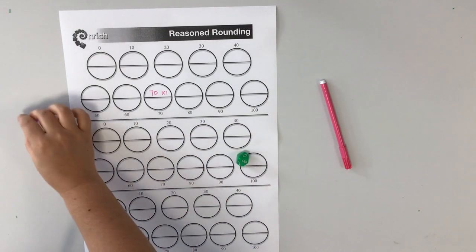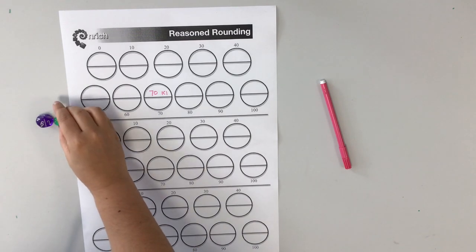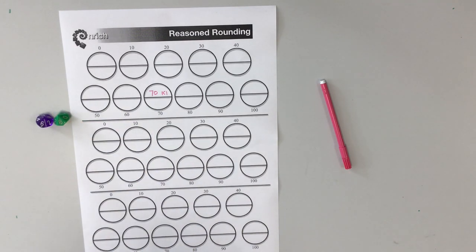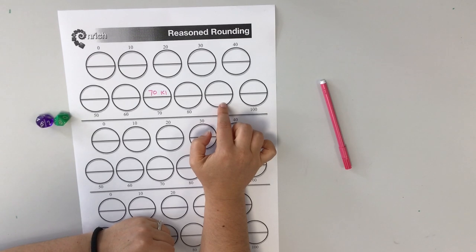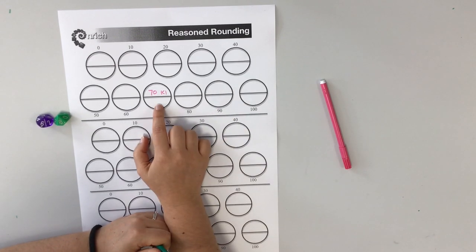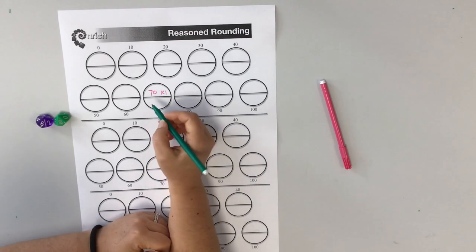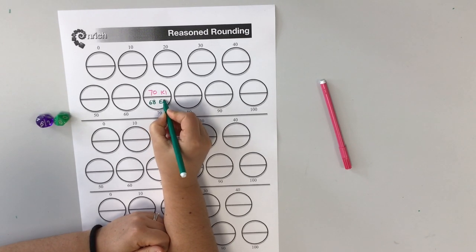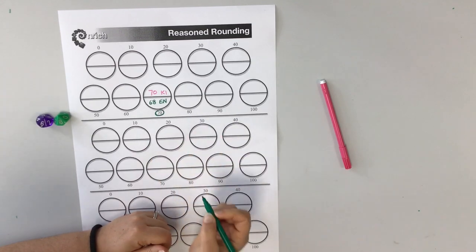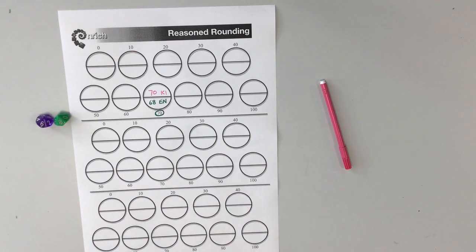So I've got a 6 and an 8. So I could either use that as 68 or 86. So if I use it as 68, that would round up to 70. If I use it as 86, that would round up to 90. I could put 86 in here and win half a circle, but that's not much use to me. If I'm the second person to put a number in the circle, that means I win it. So I'm going to take this opportunity to win this circle. So I'll put my 68 in there with my initials.